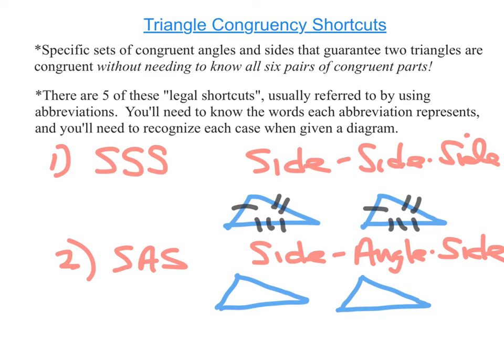The second case is called Side-Angle-Side, and it's abbreviated as SAS. It's not an accident that the A is written between the two S's, because it has to be that the angle is in between the two sides.